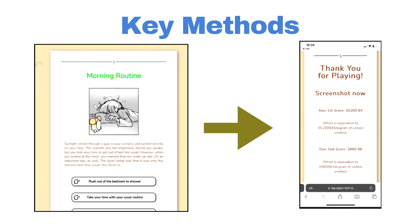After the player finishes a playthrough, they will receive a result that tells them how much carbon footprint they have emitted in a day. After they have seen their first result, we will ask them to reflect on their actions and provide them with exactly how much carbon footprint increases with each choice they made. This will give them a chance to redo their day in the game and help them visualize how they can improve their carbon footprint score, giving them both a goal to move forward to and a clear direction to follow.